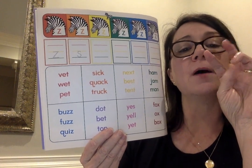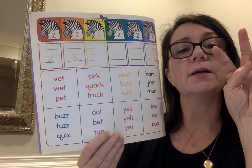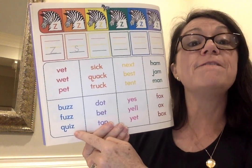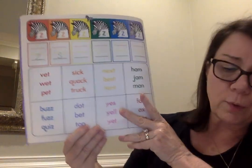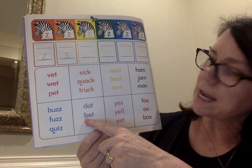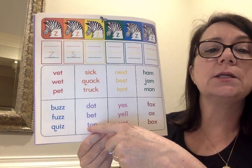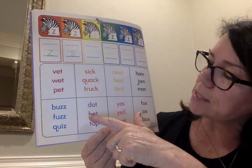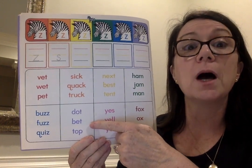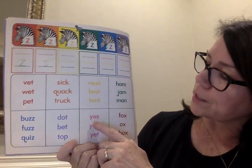Now coming down here to the blue words: buzz, fuzz, quiz. We've got B-U-Z-Z, F-U-Z-Z, and quiz. I want you to read those and circle the word buzz. Moving over to the purple words — dot, bet, and top. I want you to circle the word bet.